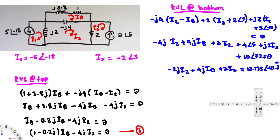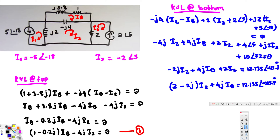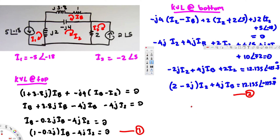Writing this cleanly: 4j·ib plus (2 − 2j)·i2 = 12.135 angle negative 125.7°. This is Equation 2. Now with two equations and two unknowns we can solve for ib and i2. The solutions are: ib = 2.73 angle 152.1° and i2 = 0.697 angle negative 129.2°. That is the final answer.